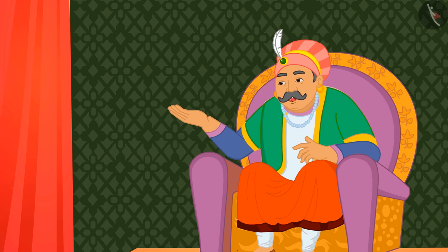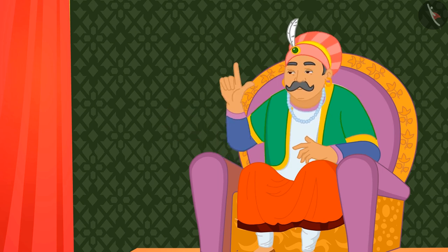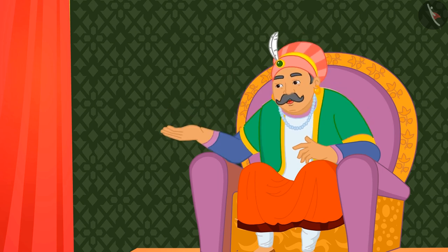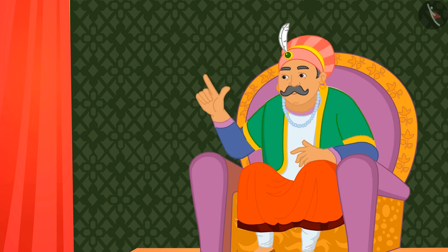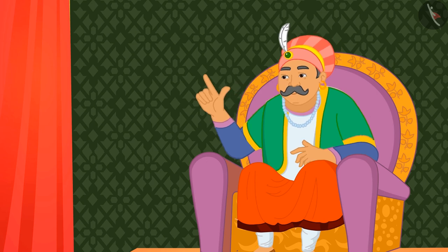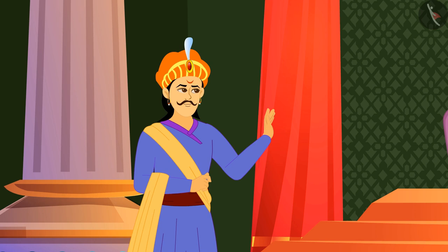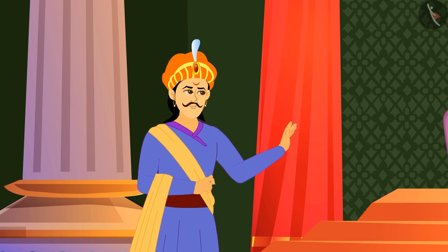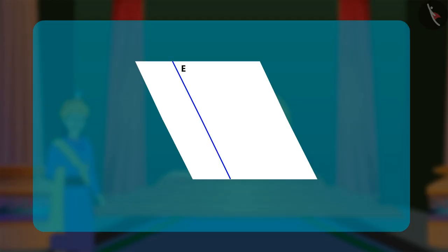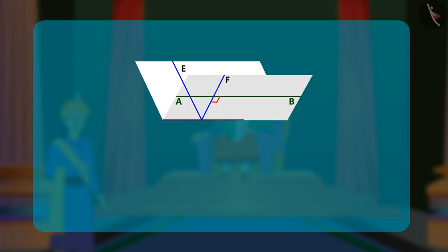Perpendicular lines seem simple. How will you form a line parallel to a given straight line, asked Akbar. Let me show you, said Birbal. He forms a line EF perpendicular to the given line AB like he had done before, and then folds a line CD perpendicular to EF.